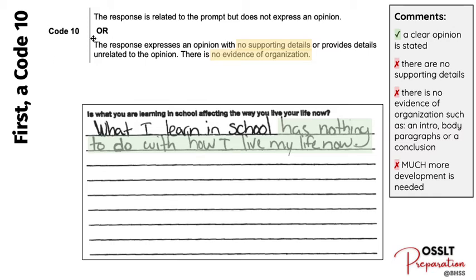We are currently looking at a Code 10 example for the long writing response from your practice test number one. The question you responded to was: 'Is what you're learning in school affecting the way you live your life right now?' Up here is the success criteria for the Code 10 response, and I've highlighted the specific parts that apply to this.